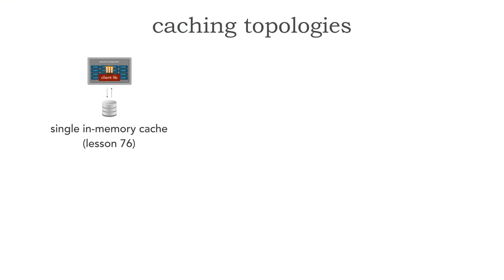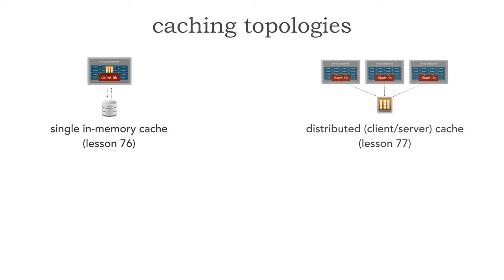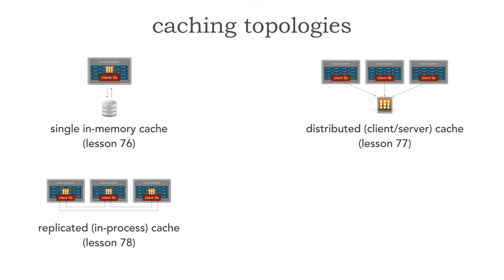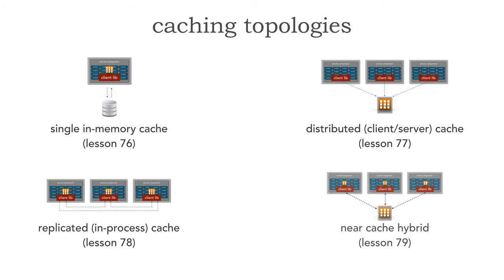So far, in lesson 76 we looked at the use of a single in-memory cache. Then in lesson 77 we took a look at a distributed cache, otherwise known as a client-server. In lesson 78 we saw the use of a replicated cache where all of the data was kept in sync in memory between all of those server instances. And then finally in lesson 79 we looked at a near cache hybrid — a combination of distributed as well as the single in-memory cache from lesson 76.